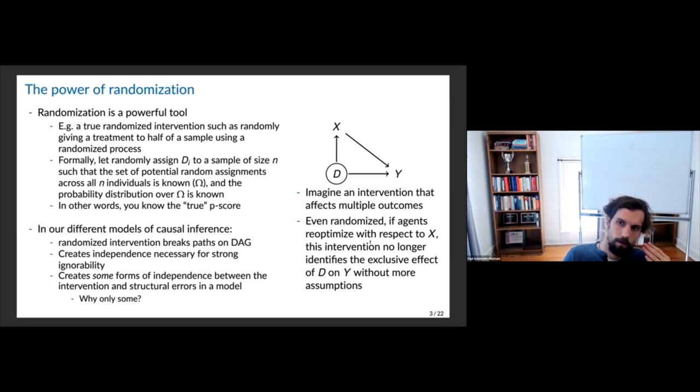More generally, if I look at the effect of D on Y and just run the regression of D on Y, I'm not inherently going to get that effect — I'll have another causal path as well in this DAG setup.